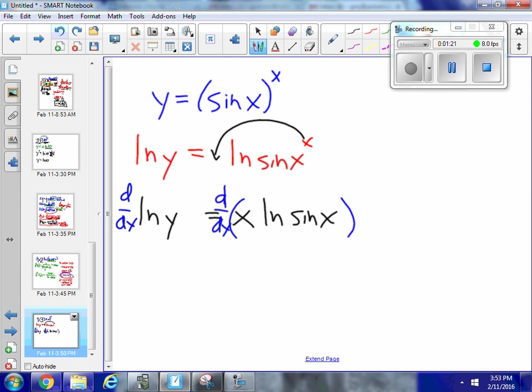So on my left-hand side, the derivative of a natural logarithm would be 1 over y, over the argument. But since y is a function, I need to use the chain rule, and that's going to be dy dx, the derivative of y.